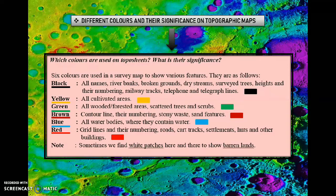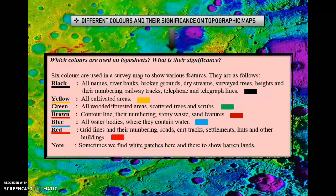The next color is brown. Contour lines will be brown in color. Stony waste and sand features are also shown in brown color. Blue color: all water bodies are in blue — especially all perennial water bodies which have water throughout the year, whether it is a river, tank, well, canal, or anything.